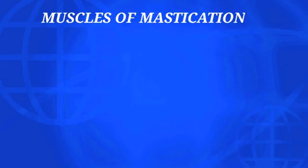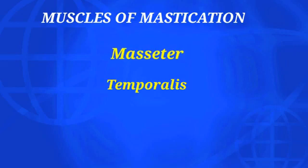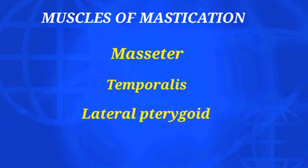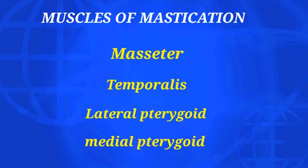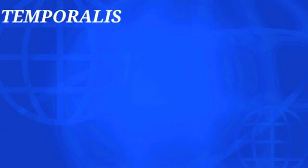Muscles of mastication: there are four muscles involved in the masticatory process — masseter, temporalis, lateral pterygoid, and medial pterygoid.